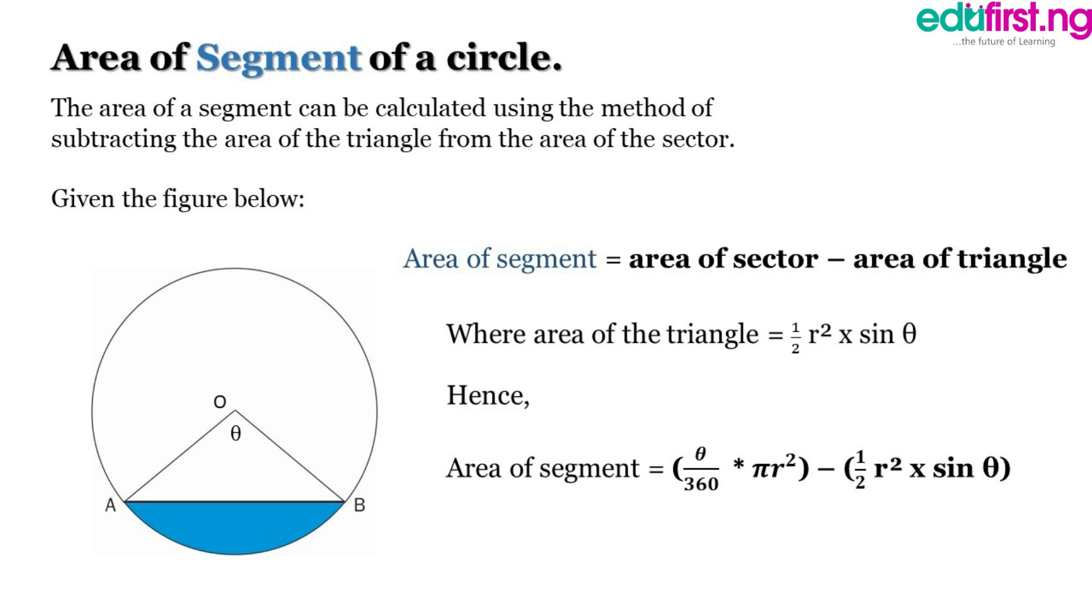Okay, so next we're going to be going on to area of segment of a circle. This is also a part of a circle and it's usually the shaded portion which is blue, comprises of the length of the chord and the length of the arc. So this portion shaded blue is the segment.